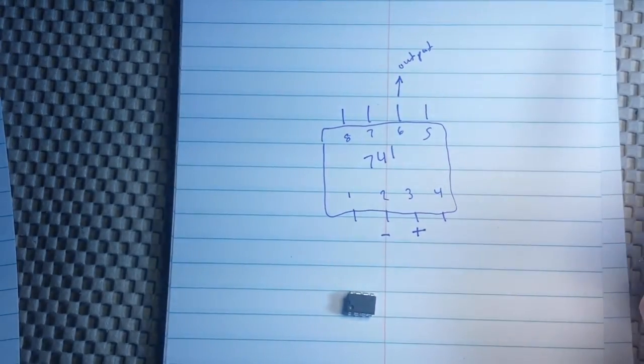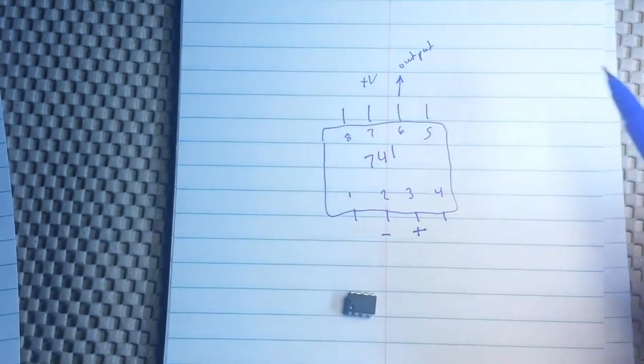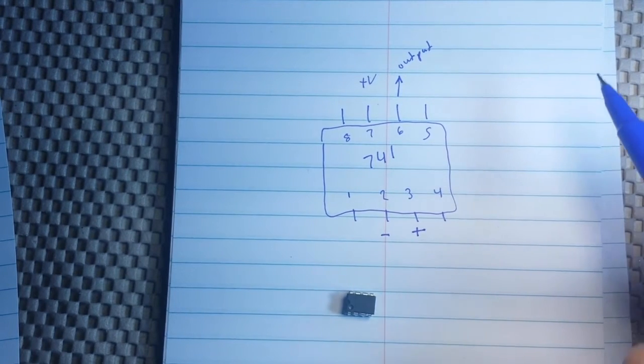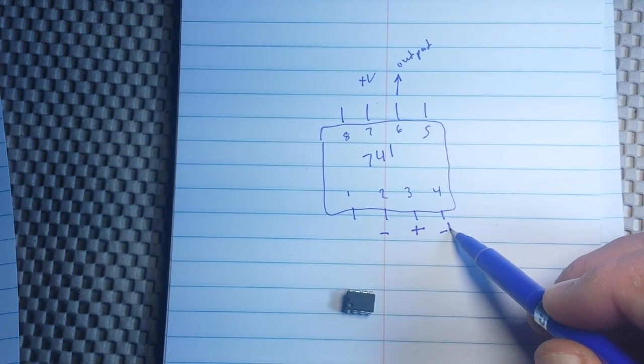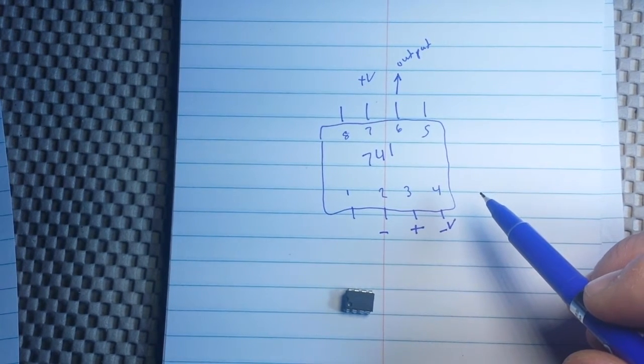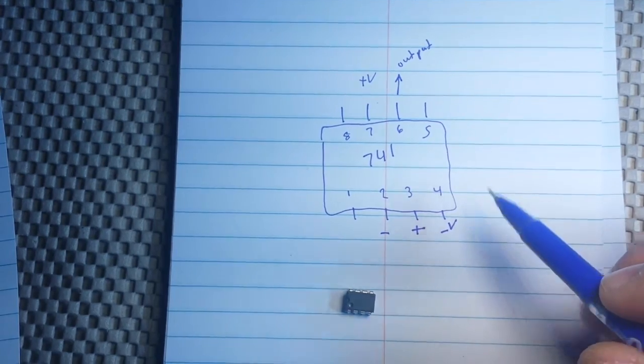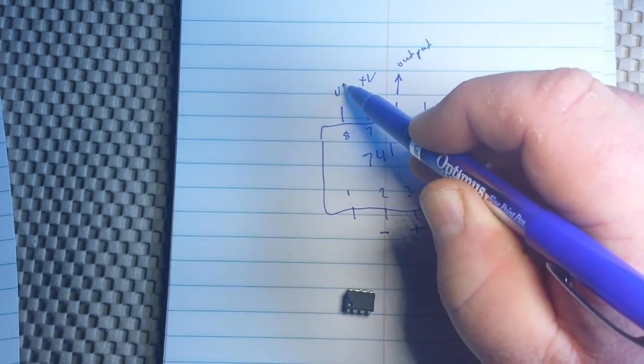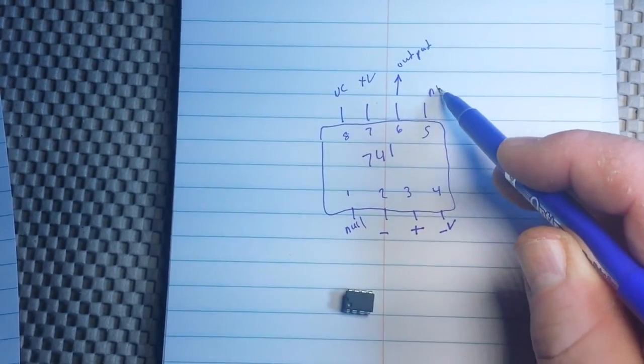Alright. Pin 7 is our positive voltage in. Pin 8 is our negative voltage in. Pin 8 is not connected. Pins 1 and 5 are nulls.